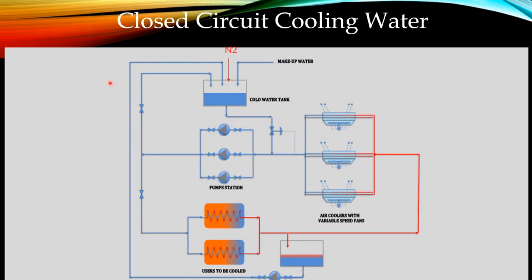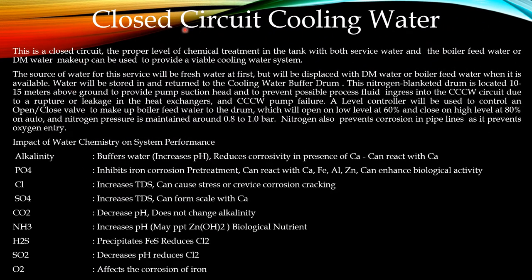In this episode we will see about the closed circuit cooling water. This is a schematic diagram of a closed circuit cooling water system. The buffer tank or storage tank is given with nitrogen blanketing. Makeup water — normally demineralized water or boiler feed water — is provided. Service water makeup is also available, and this is the pump section, which goes to a heat exchanger to pick up the heat load. One portion then circulates back and another goes to the cooling area where air coolers cool the hot water before returning to the pump section.